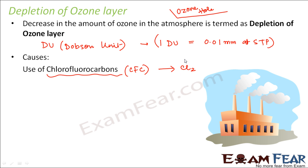One chlorine molecule can destroy around 1 lakh ozone molecules — that is a big number. With so much use of refrigerators and air conditioners, the amount of chlorofluorocarbons has also increased. Due to their increase, the amount of CFCs reaching the outer layers of atmosphere has also increased, so formation of chlorine has also increased, and therefore destruction of ozone molecules has increased.